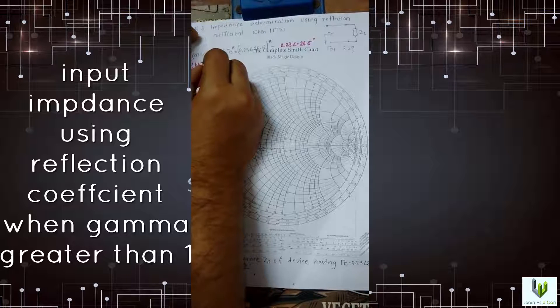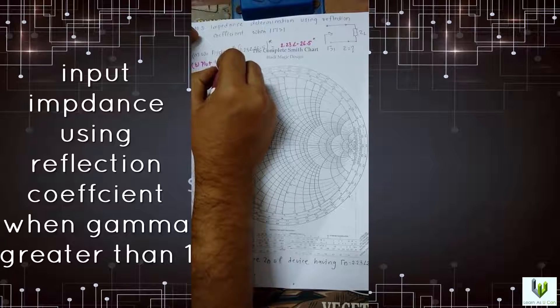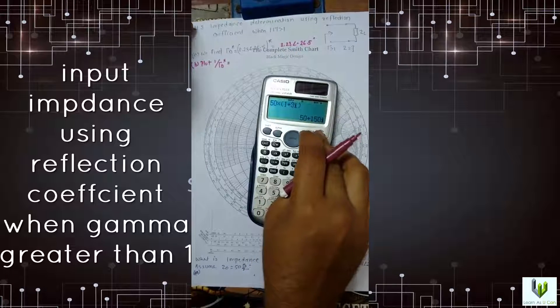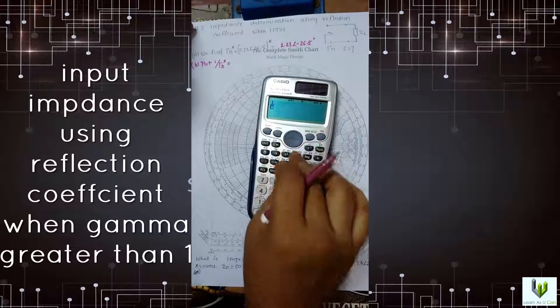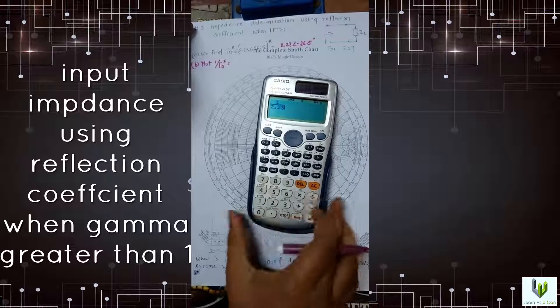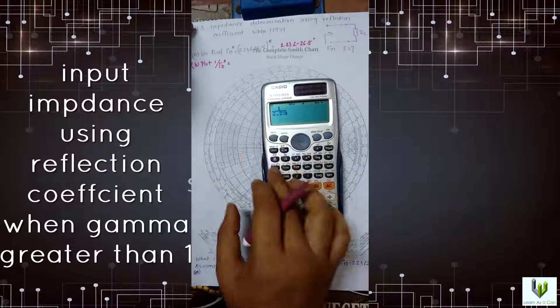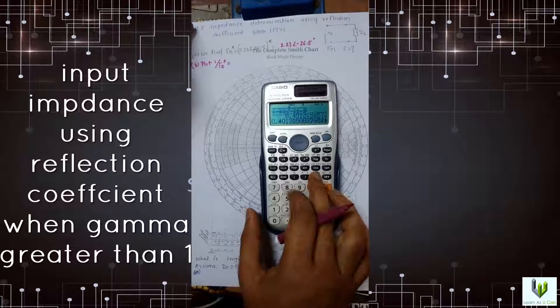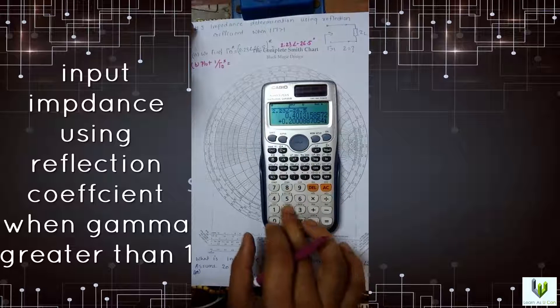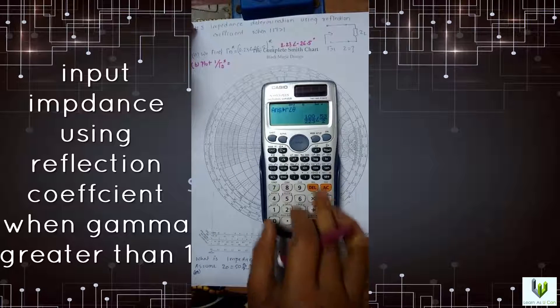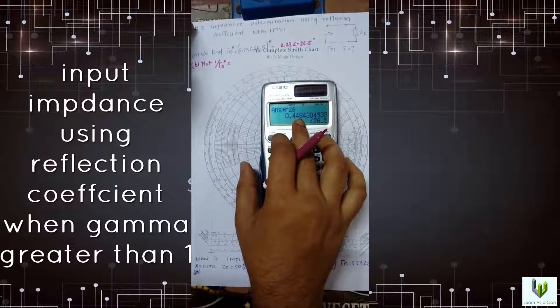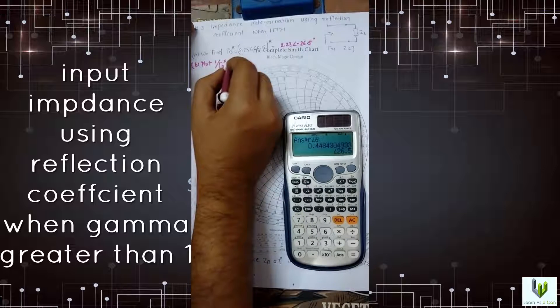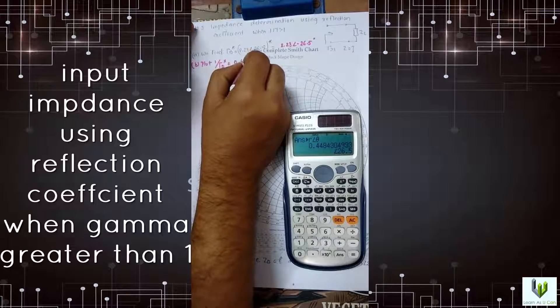Now the next step is plot 1 by gamma D conjugate, which means we have to calculate this: 1 by 2.23 angle minus 26.5. Just convert it into 0.448 angle 26.5. I am using this result 0.448 angle 26.5.